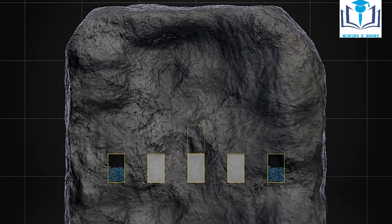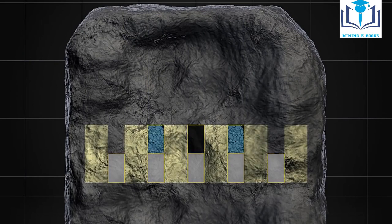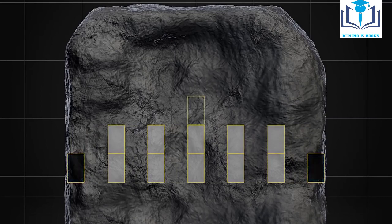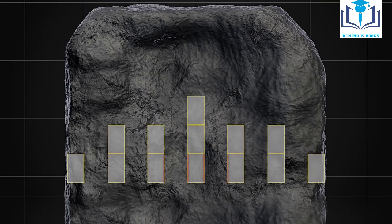The secondary stopes are left as pillars until the adjacent primary stopes have been mined and backfilled. Stabilized fill in the primary stopes prevents sidewalls from caving in when secondary stopes are mined.